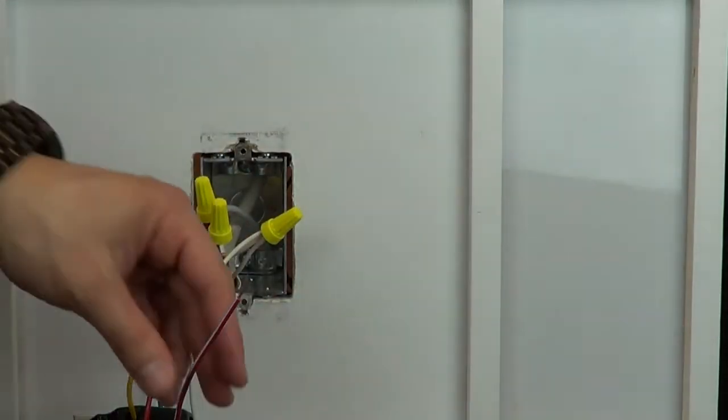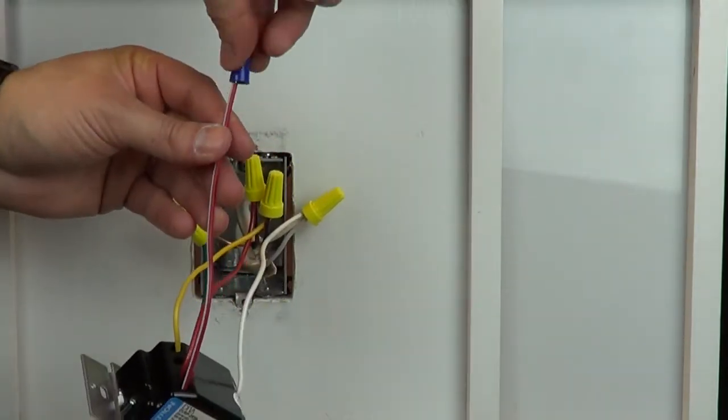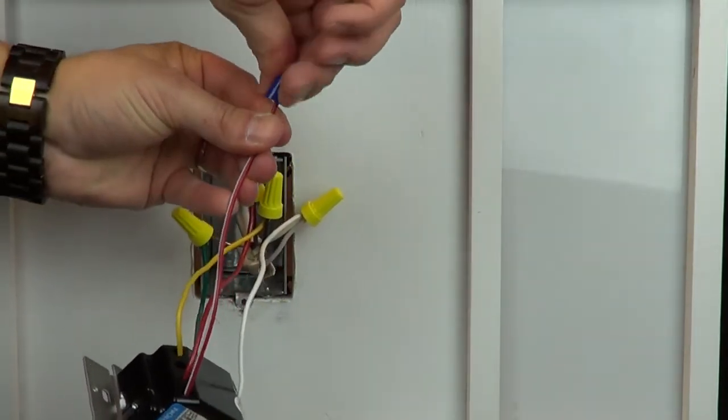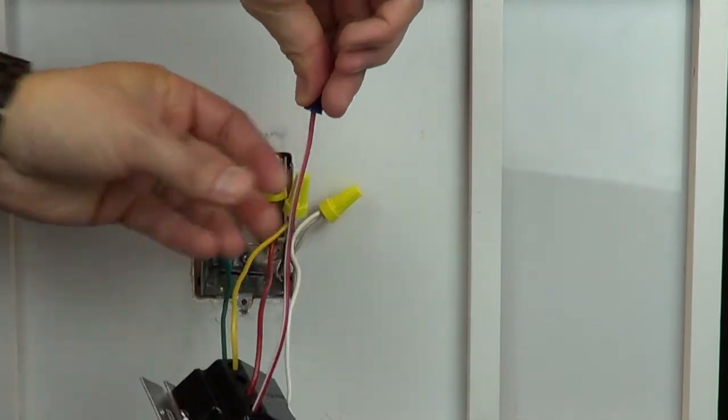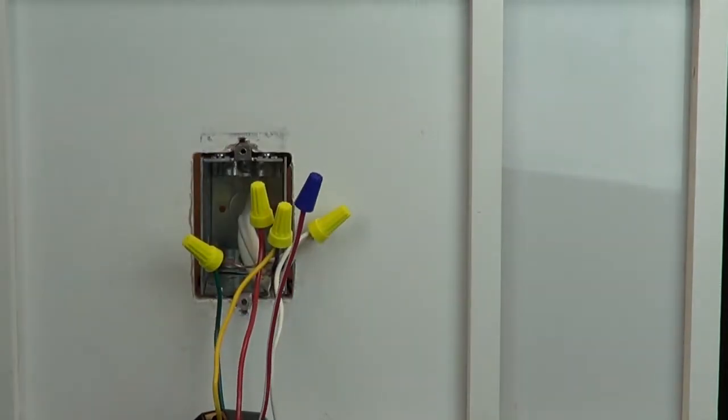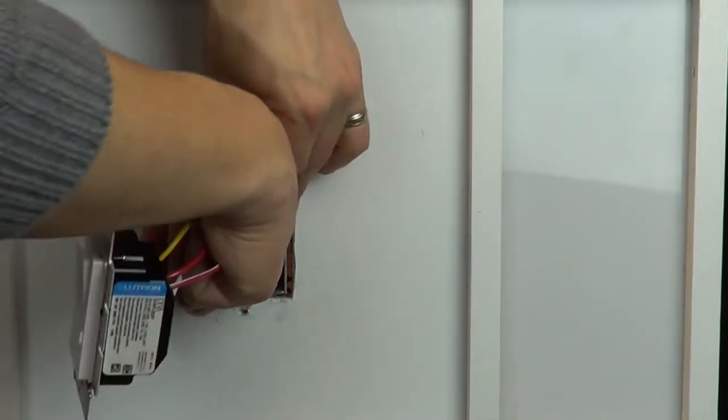Place a wire cap on the red-white striped wire on the dimmer, as you won't be using it. Screw the control back into the wall and add the wallplate.